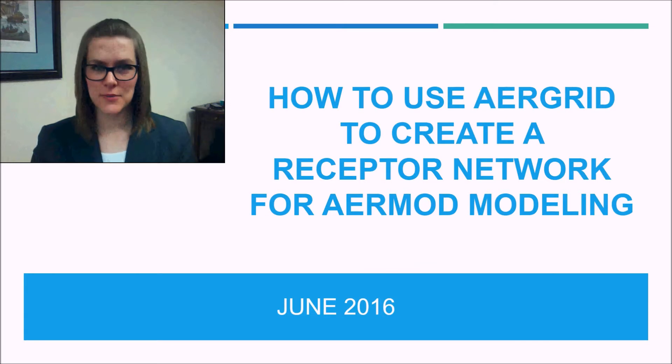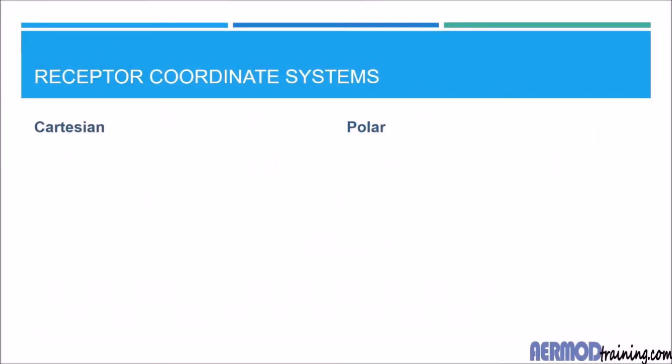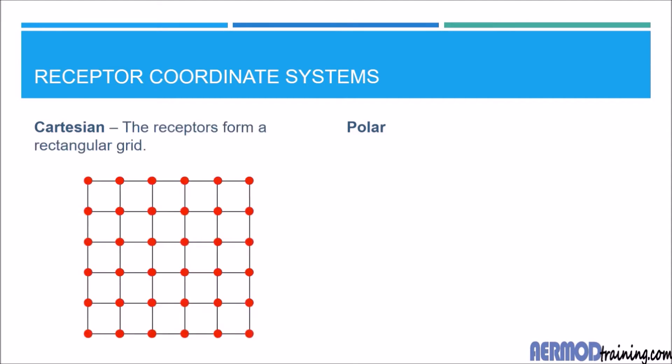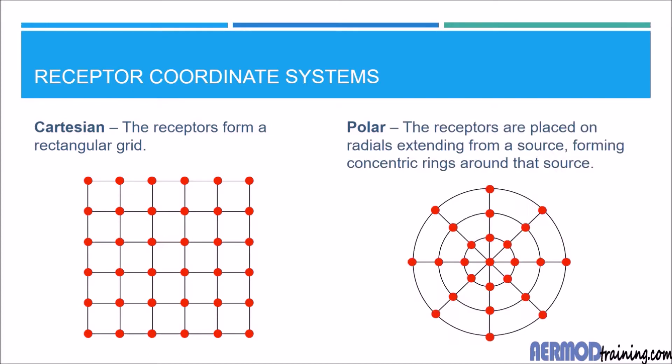Thank you. I'm Sarah Weaver with airmodtraining.com. I'm going to show you how to use AirGrid to generate a receptor network for AirMod modeling. A receptor network typically contains multiple grids. The receptor locations in each grid are based on either a Cartesian or polar coordinate system. Receptors in a Cartesian coordinate system form a rectangular grid, and receptors in a polar coordinate system are placed on radials extending from a source, forming concentric rings around that source.